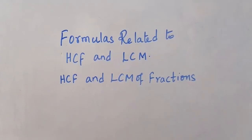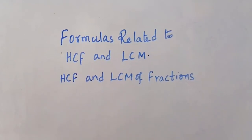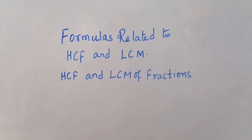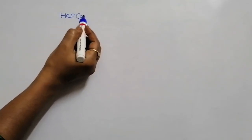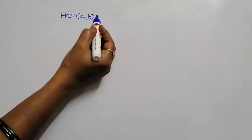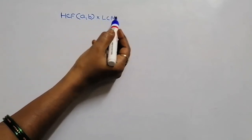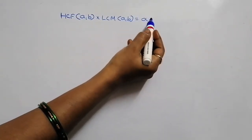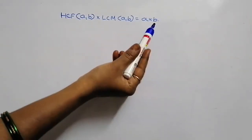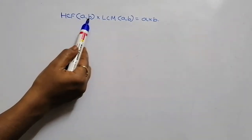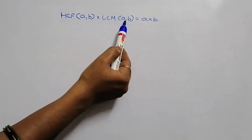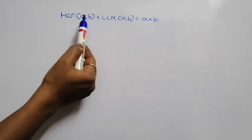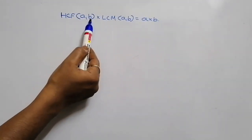First, I am going to explain you about the formulas used in our questions. HCF of A, B into LCM of A, B is equal to A into B. This means that HCF of two numbers into LCM of two numbers is equal to product of two numbers. Here the two numbers we have taken are A and B.